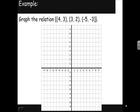(4,3) is a point - if we start at the origin and go right 4 and up 3, we'll have the point (4,3). (3,2) is a point, right 3 and up 2. (-5,-3) is a point, left 5 and down 3. So there's our relation, it's just 3 points. Don't draw a line through this because it didn't ask us to draw any kind of continuous function, it just asked us to graph the relation of these 3 points.